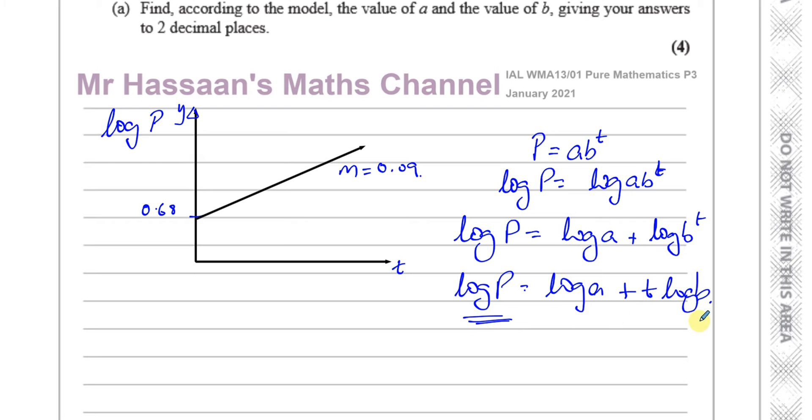So I end up with log P equals log A plus T times log B. Now the variables are log P and T. P and T are the variables here. So this is like Y equals M times X plus C. This is the gradient and this is the Y-intercept. It's like in the form of a straight line. When you take logs of both sides, you change it into the form of a straight line.